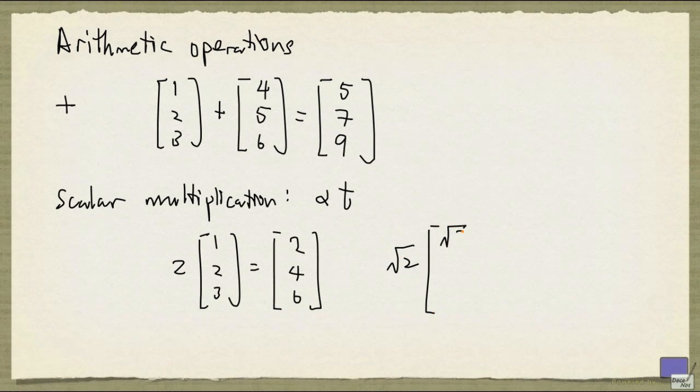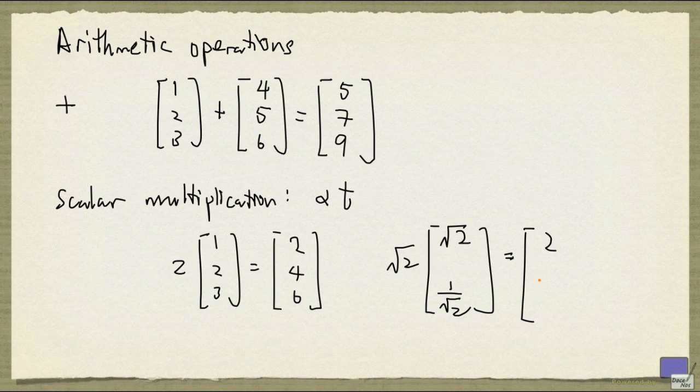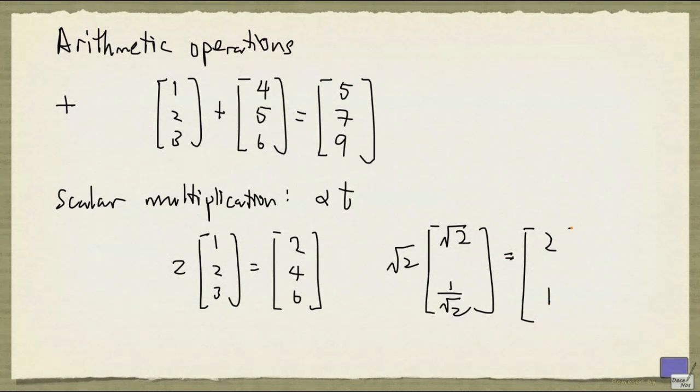If you're looking at square of 2 times this 2-tuple here, you get square of 2 times square of 2 is 2, and this is just 1 down here.